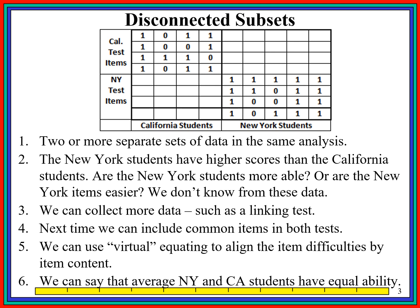We could do some things to get around this problem. We could include some of the same items in both tests — those would be common items or linking items. Or we could look at the content of the items and do what's called virtual equating, which is to look for similar items on both tests and match them up. Or we could make some assumption about the students — if we had reason to believe the two sets of students were equally able on average, we could do a group equating. But somehow we're going to have to get around the problem that we cannot directly compare the California and New York students and items using just these data.